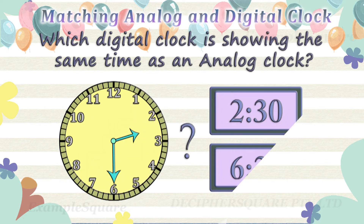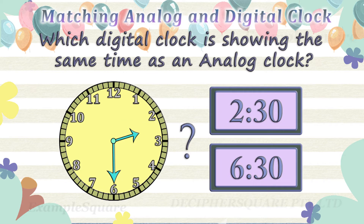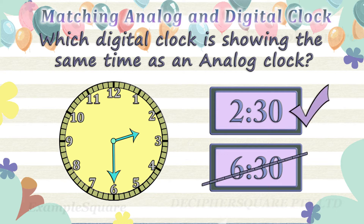Which digital clock is showing the same time as an analog clock? Time in analog clock is 2:30.